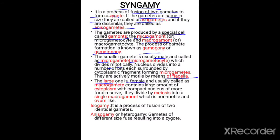The large one is female and is usually called the macrogamete, which contains a large amount of cytoplasm. With a compact nucleus and more food reserve, macrogametes divide by meiosis, whereas microgametes divide by mitosis and are motile with flagella. Macrogametes divide by meiosis into a single macrogamete which is non-motile and has a rounded ovum-like structure.